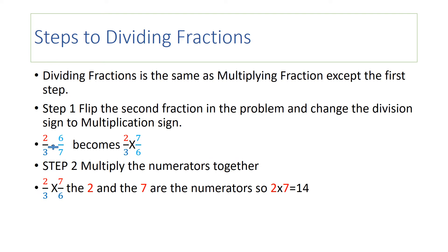Steps to dividing fractions. Dividing fractions is the same as multiplying fractions, except the first step. Step one: flip the second fraction of the problem and change the division sign to a multiplication sign. So the problem two-thirds divided by six-sevenths becomes two-thirds times seven over six.